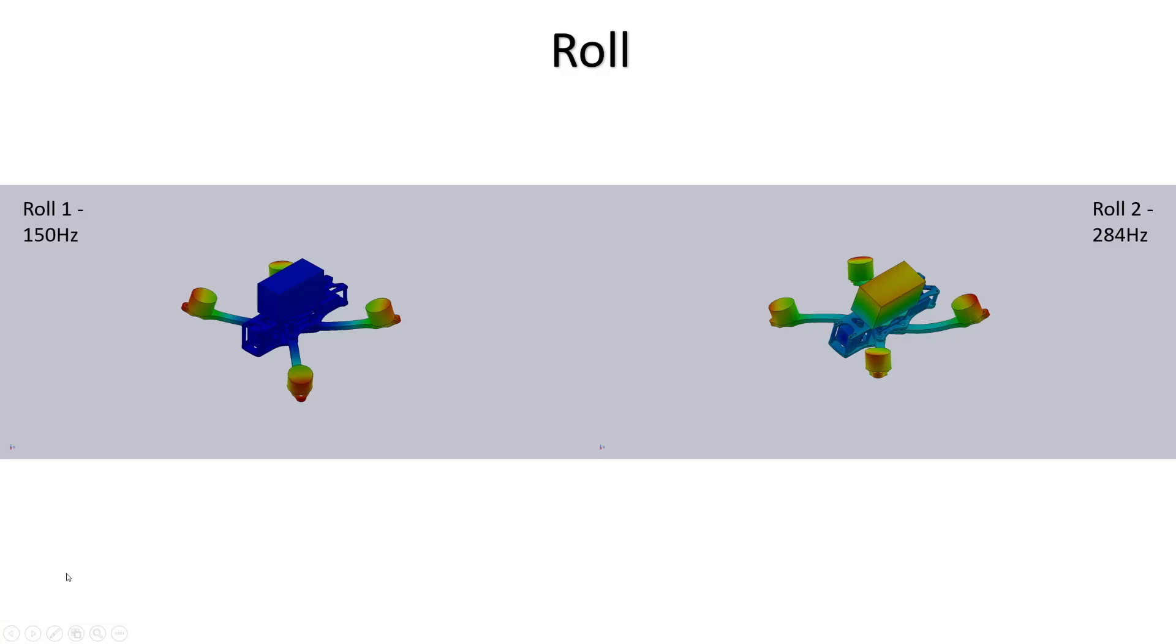If we look at some of the mode shapes from the roll axis, we can see that 150 hertz mode. That's this typical alternating mode where the arms move up and down that you've seen in lots of my other videos. It pretty much appears on every frame that I've looked at.